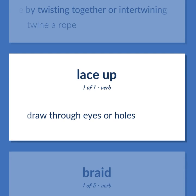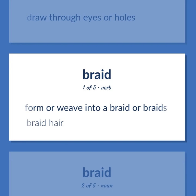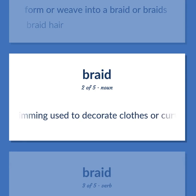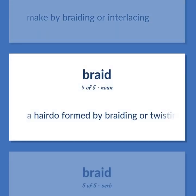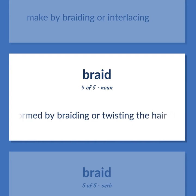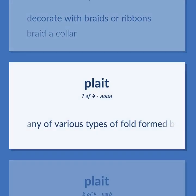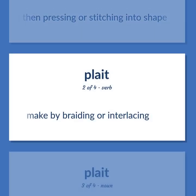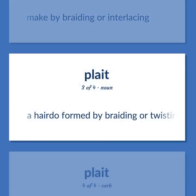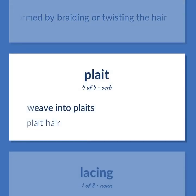Braid: to form or weave into a braid or braids. Example: braid hair. Trimming used to decorate clothes or curtains. To make by braiding or interlacing. A hairdo formed by braiding or twisting the hair. To decorate with braids or ribbons. Example: braid a collar. Any of various types of fold formed by doubling fabric back upon itself and then pressing or stitching into shape. To make by braiding or interlacing. A hairdo formed by braiding or twisting the hair. To weave into plaits. Example: plait hair.